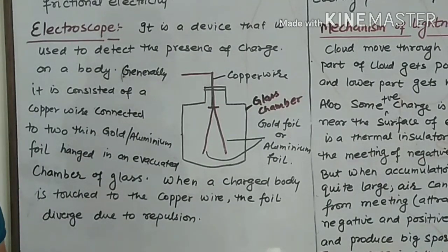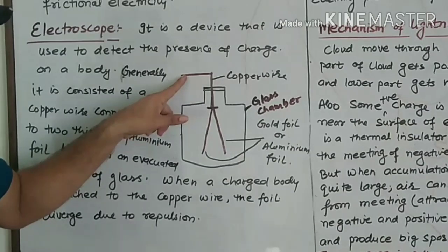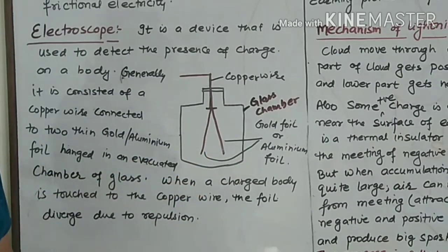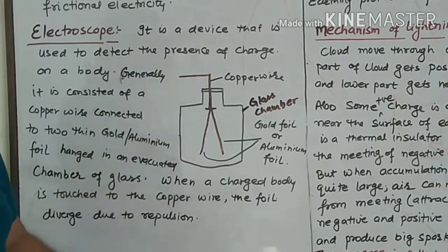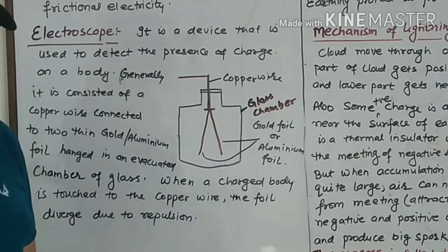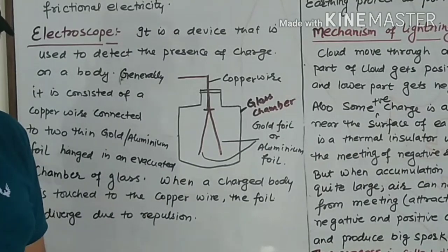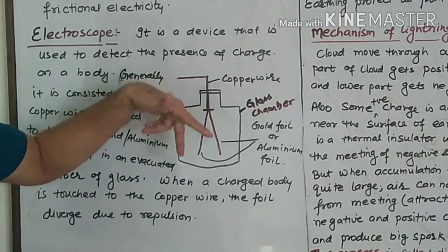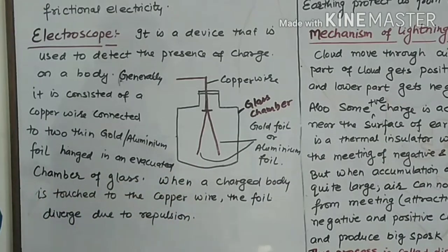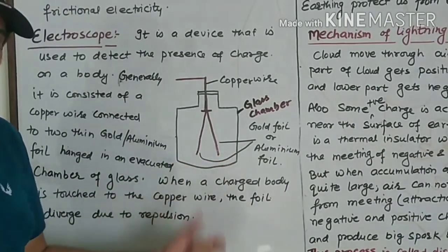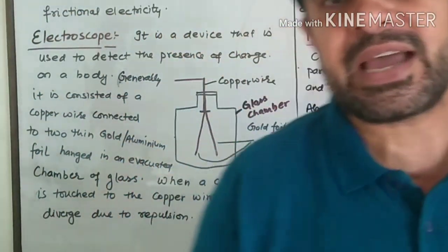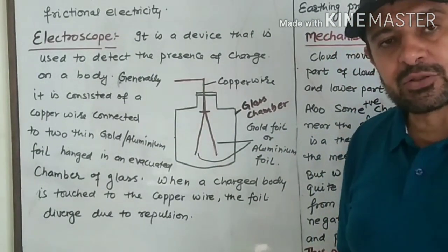If a charged body is detected, I touch the body. When I touch the body, the charge travels through the copper wire. The two foils get similarly charged. When both the foils get like charges, the two foils get diverged. If both foils are diverged, that tells us the body is charged.